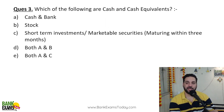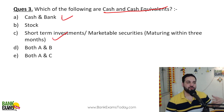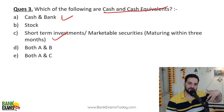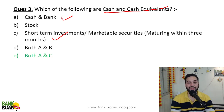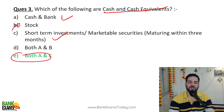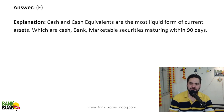Which of the following are cash and cash equivalents? Cash and bank, and short-term investments — any investment that can be converted to cash on the same day — these are cash and cash equivalents. So both A and C are correct. Stock is not correct because it may take time to convert stock into cash.